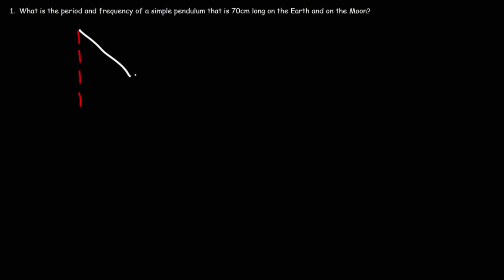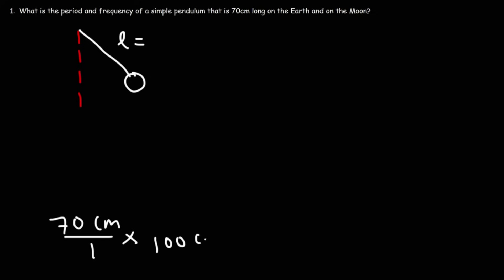What is the period and frequency of a simple pendulum that is 70 centimeters long on Earth and on the Moon? We're given the length as 70 centimeters, which we convert to meters by dividing by 100, giving us 0.70 meters. To calculate the period we use T = 2π√(L/G).